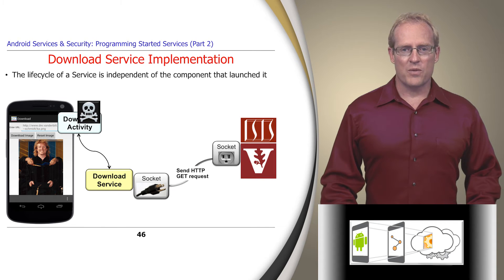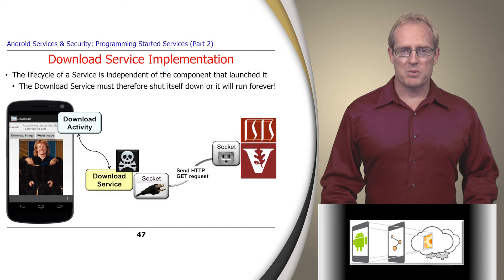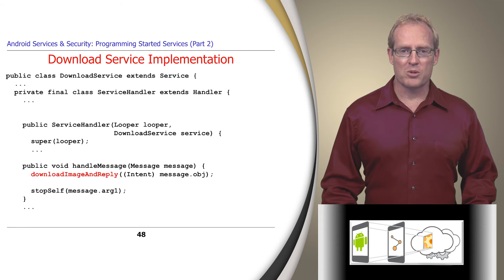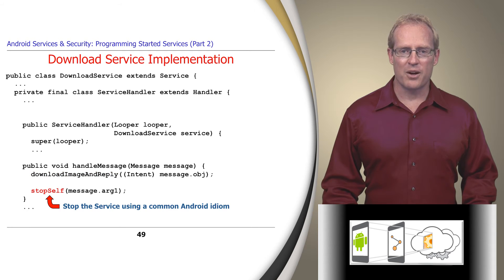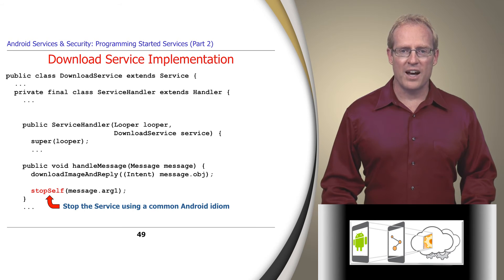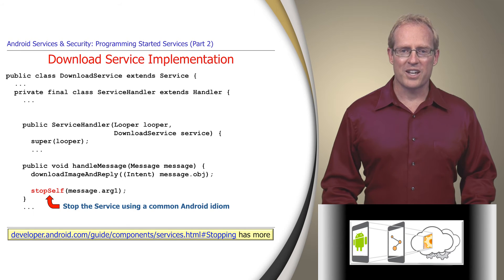Since the lifecycle of a service is independent of the component that launched it, the download service must be programmed to shut itself down or it will continue running in the background indefinitely, consuming system resources. After retrieving an image from a remote server, the download service explicitly shuts itself down by calling the StopSelf method. However, to ensure the download service doesn't shut itself down until all its concurrent processing completes, it applies a common Android idiom for stopping a service.